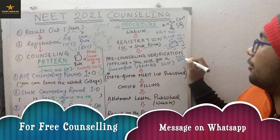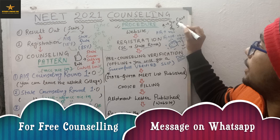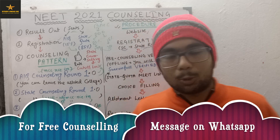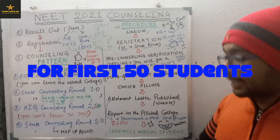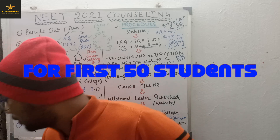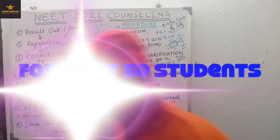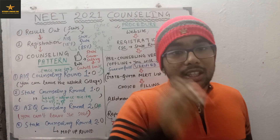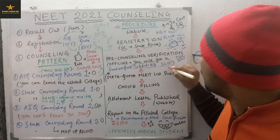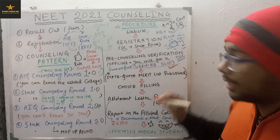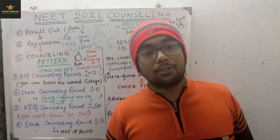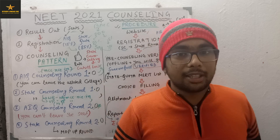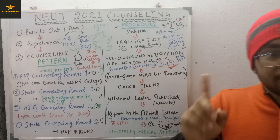What documents are required — I will make a video on that. Note: items marked with a star are for State Quota only, and items not marked with a star are for both All India Quota and State Quota. Offline, you will be called to a college where you will have to submit your documents. After you show all documents, they will give you a successful verified slip. Keep this slip very carefully — if it gets lost, you will not get a place in your college.